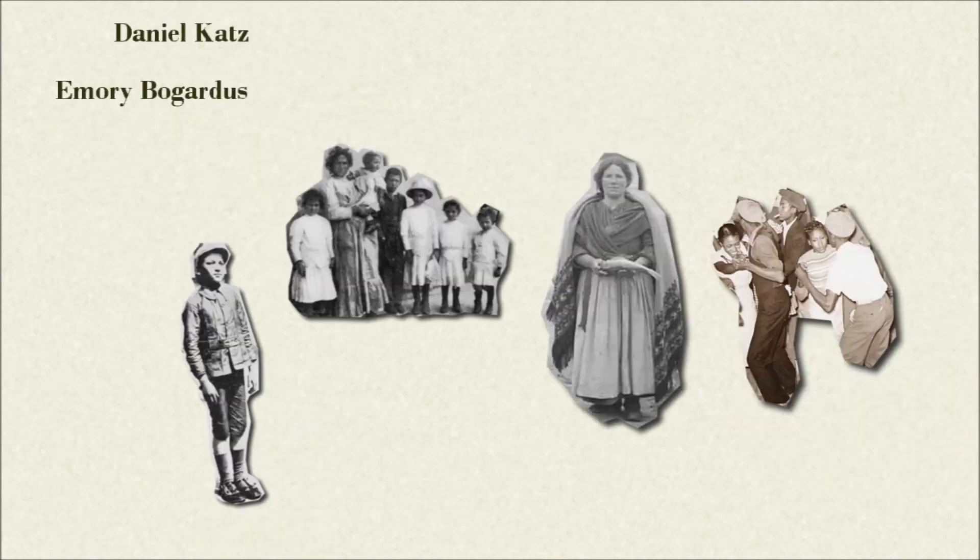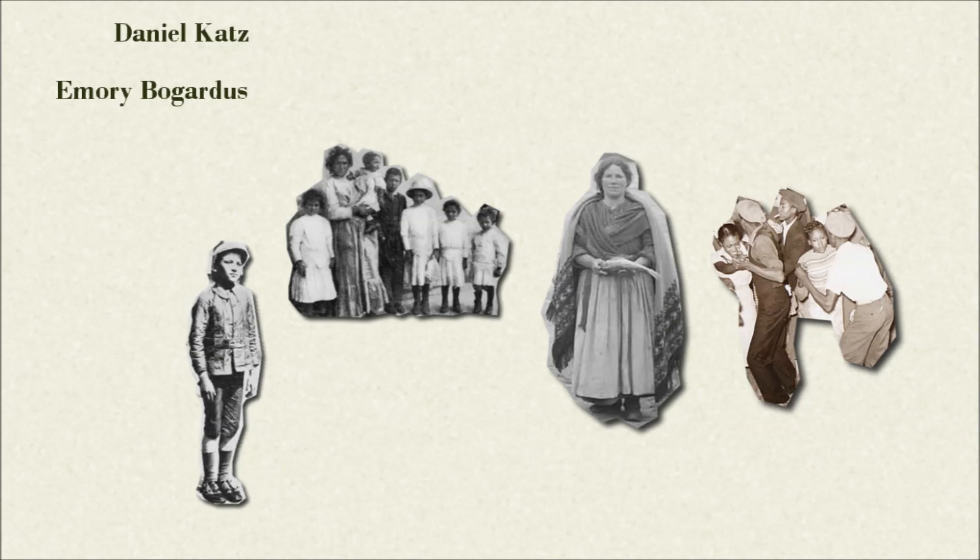Psychological scientists such as Daniel Katz and Emery Bogardus jumped onto the topic, focusing on biases against immigrants, especially Jewish, Irish, and Italian people, and biases against black Americans.